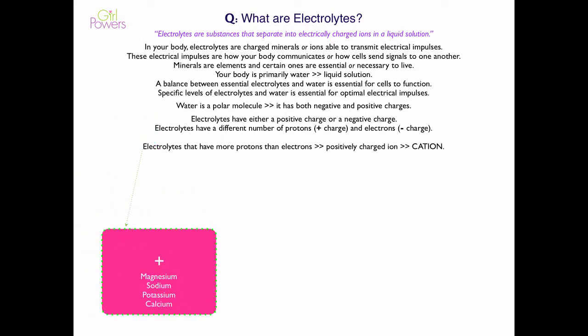Electrolytes that have more protons than electrons are positively charged ions, or cations. The essential cations in our body are magnesium, sodium, potassium, and calcium.